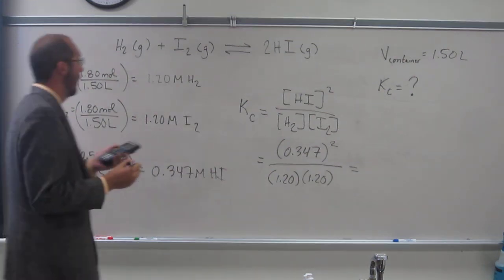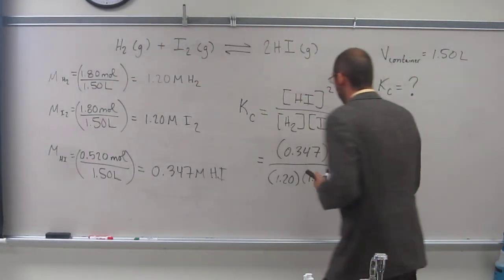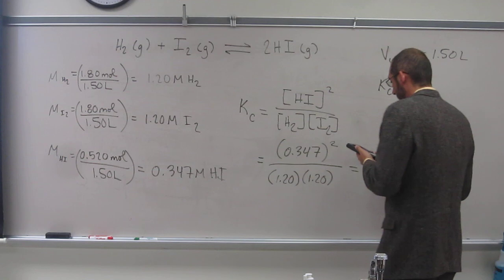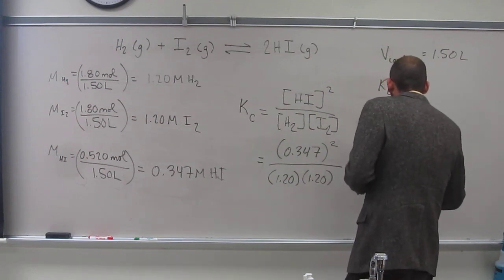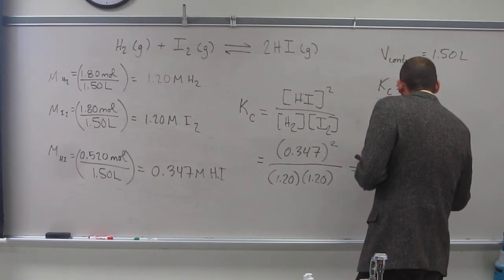So the value I get to three sig figs is 0.0835.